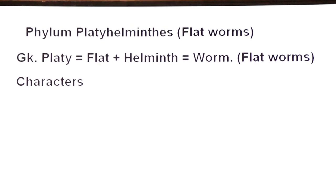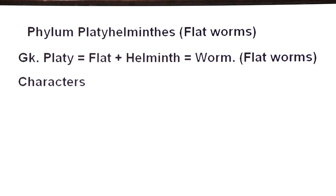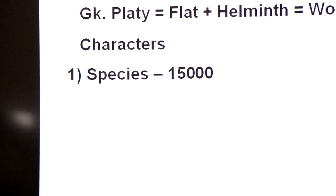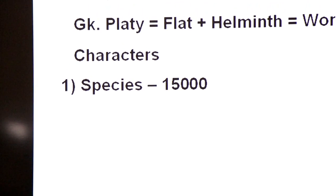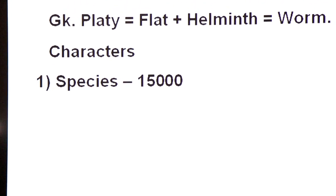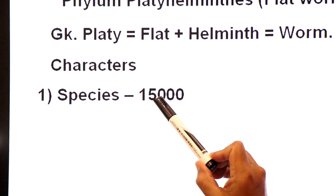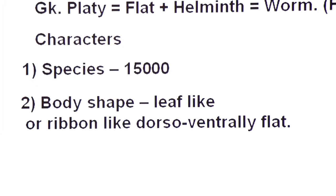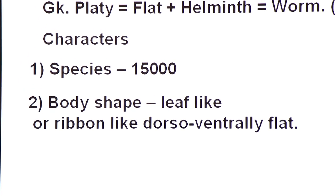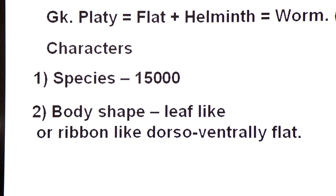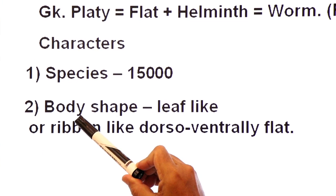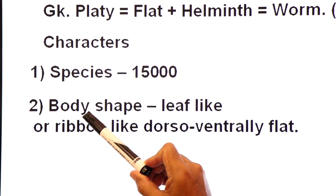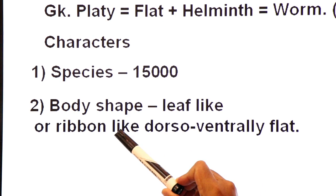Now we will discuss the main characteristics of phylum Platyhelminthes. According to our Sindh Biology textbook, this phylum includes 15,000 species. The phylum takes its name from the body shape of its members. The members are dorso-ventrally flat, with a body shape that is leaf-like or ribbon-like.